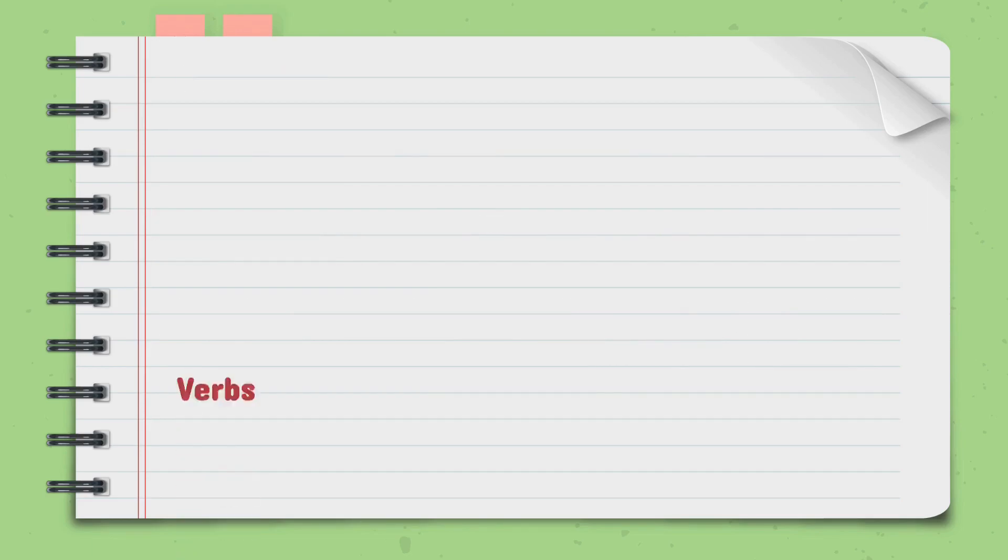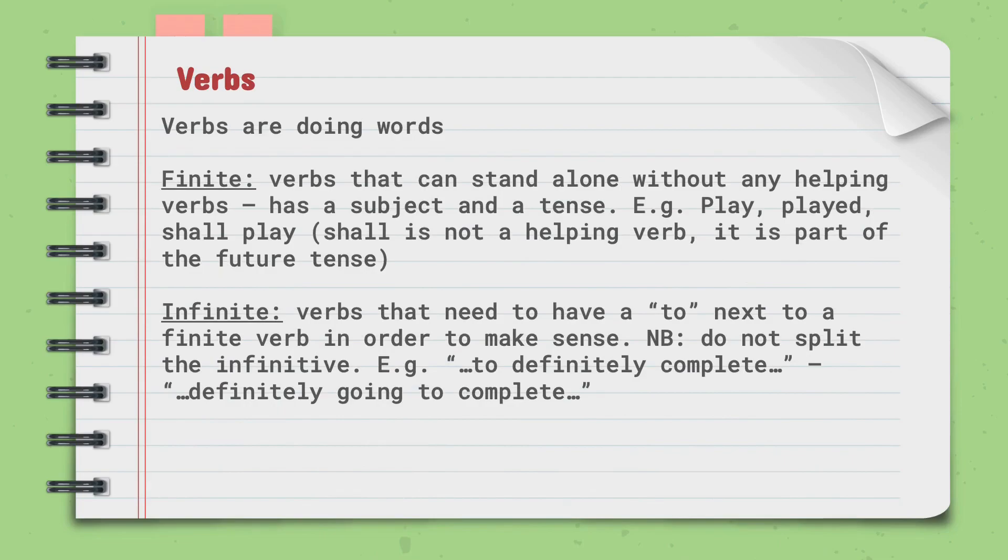Now, let us look at verbs. What are verbs? Verbs are doing words. There are finite verbs, which are verbs that can stand alone, without any helping verbs. It has a subject and a tense. For example, play, played, shall play.